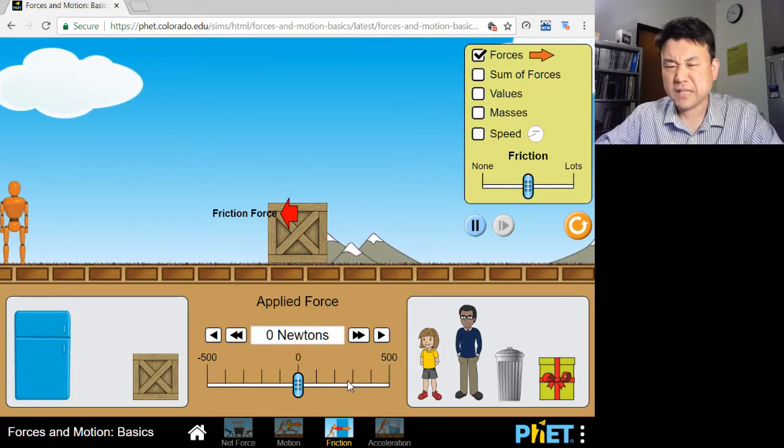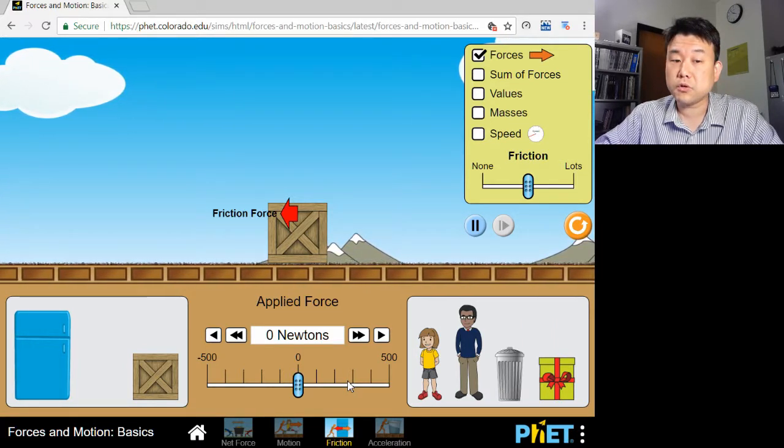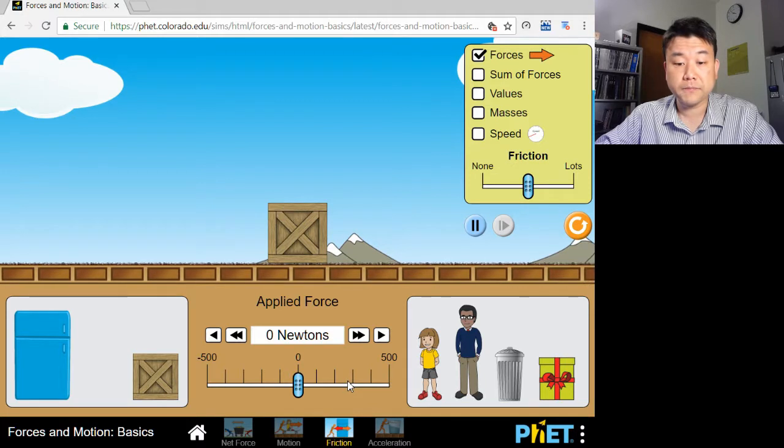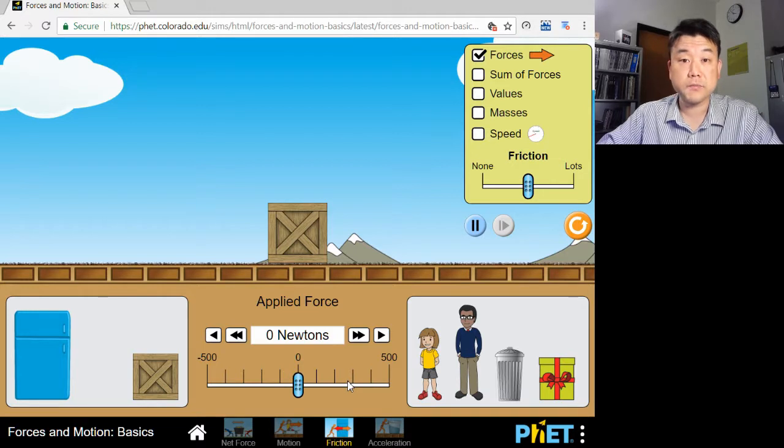When I stop pushing, the kinetic friction force remains, opposing the sliding motion of the box against the ground. This friction force is responsible for the negative acceleration, which eventually brings the crate to a stop. And once it stops, the friction force disappears also.